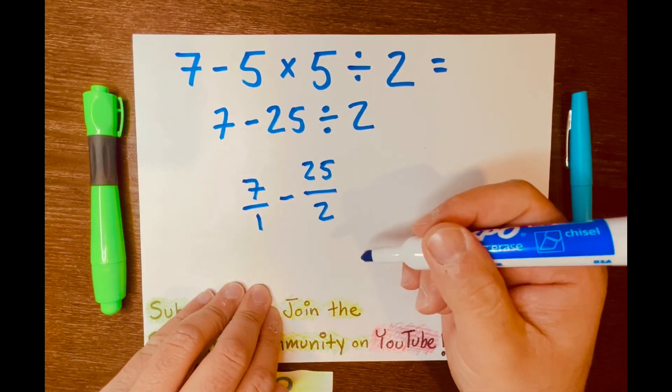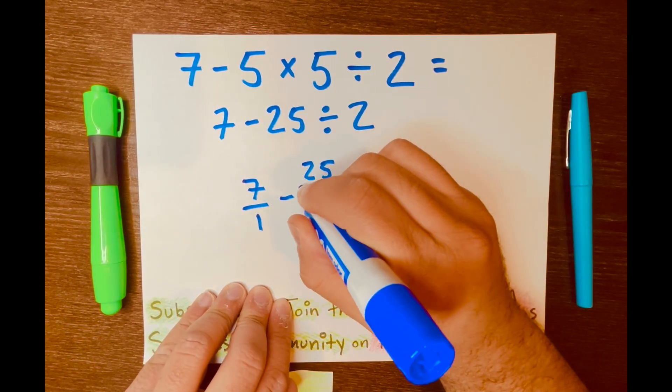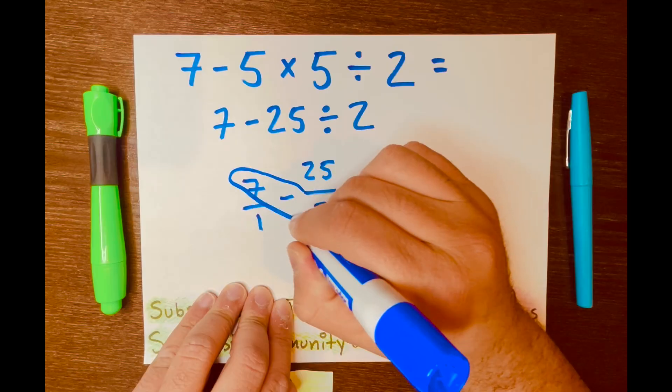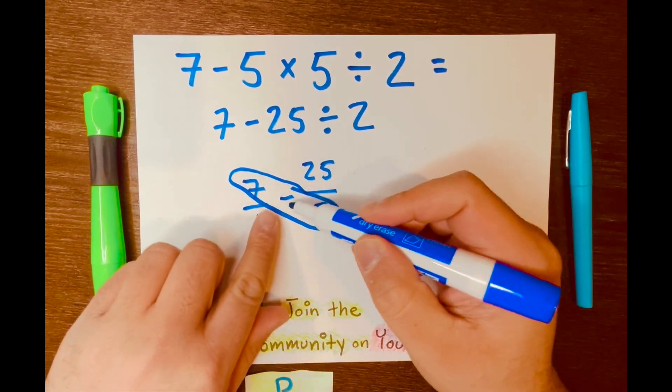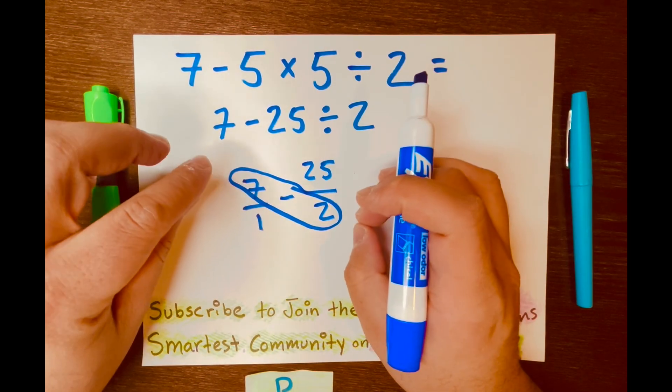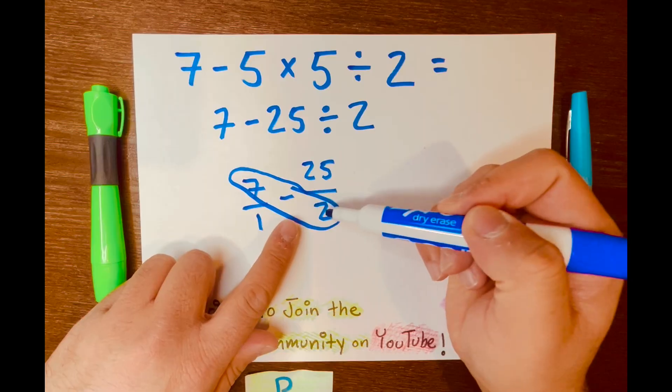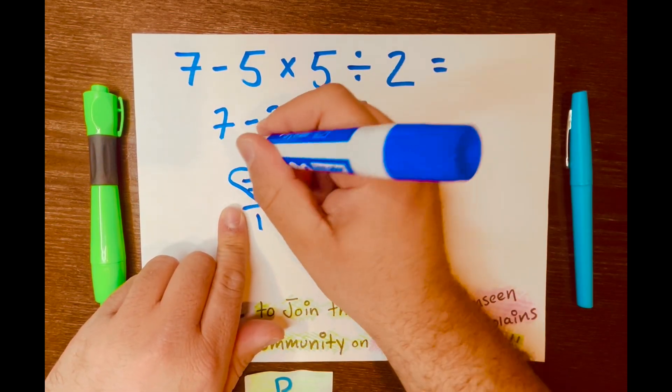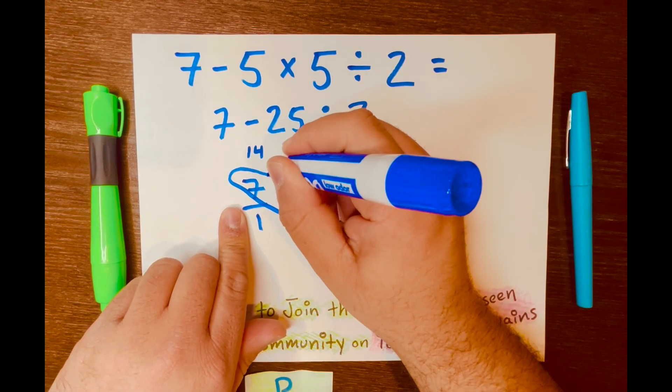And we're going to use the butterfly method. So we'll draw the first wing. 7 times 2, we're not subtracting when using the butterfly method. We are multiplying 7 times 2, or 2 times 7, equals 14. So I'll write the 14 right there and draw the antenna.